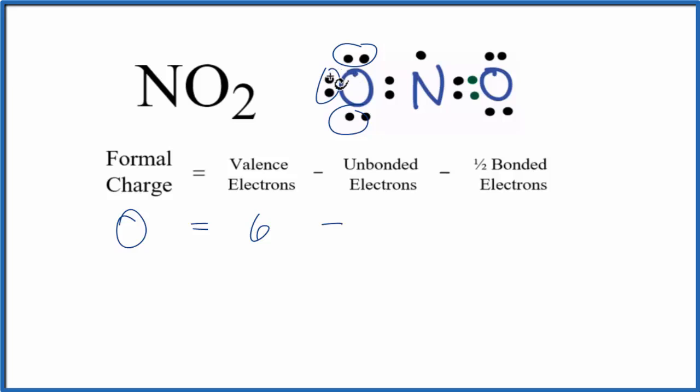We have two, four, six of those. And then we'll subtract one half of the bonded valence electrons. These two right here, they're between the oxygen and the nitrogen, they're involved in a chemical bond. So we have two of those divided by two.